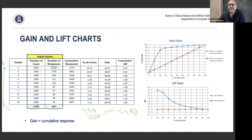The cumulative lift chart tells you how many times more response you got compared to the baseline. Taking the top 10% of data, you get 4.5 times more responses than random selection. For the top 20%, you get 4 times more. For the top 40%, you get 2.5 times more. And if you take everybody, the lift is 1 — same as the base rate.